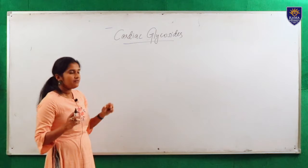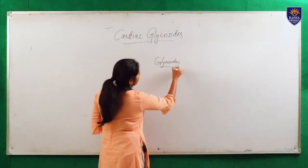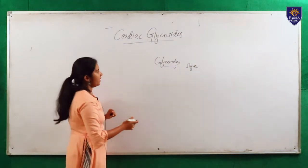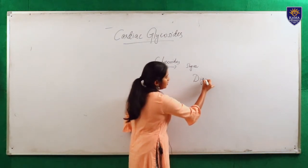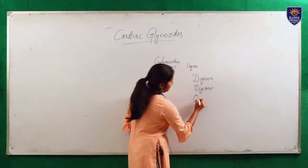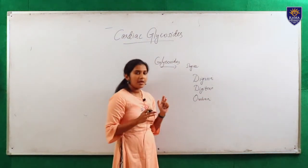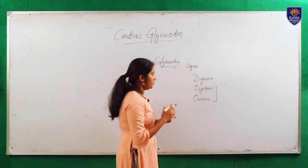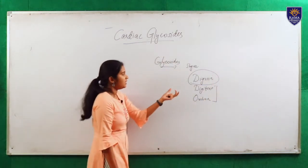From the name itself, we can expect that there is a sugar group in the drugs. Some examples of cardiac glycosides — the main drugs — are digoxin, digitoxin, and ouabain. Among these, digitoxin and ouabain are not well used currently. The main drug now used under cardiac glycosides is digoxin.